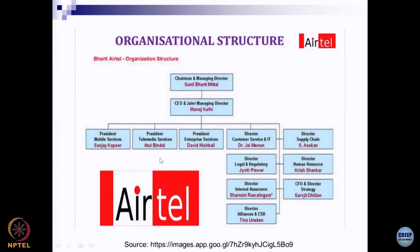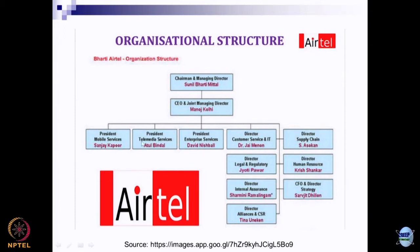We do not see here the production head, marketing head, or operations head — designations related to specific functions reporting to the CEO or joint managing director. In this type of organization design, the first layer after the business head is not about functions but about the services or products being offered.